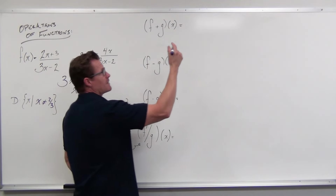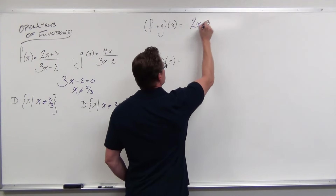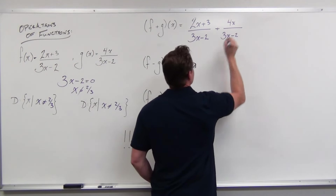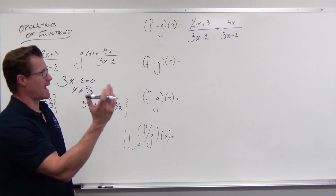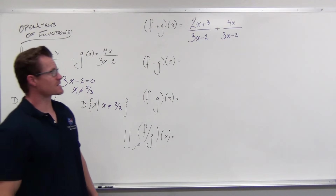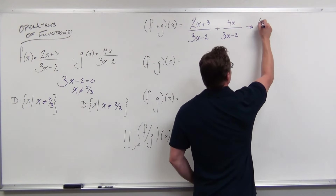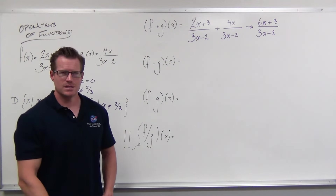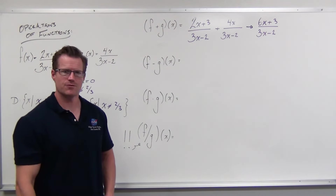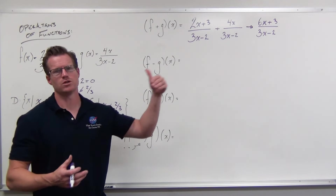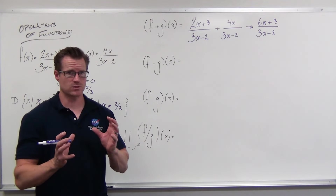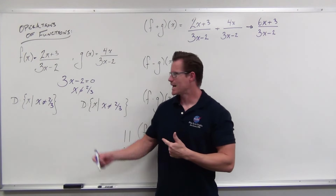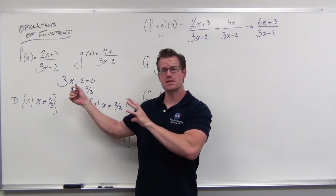So f plus g of x — if we add these functions together, we need a common denominator to add fractions and we already have that, so we're just combining numerators. That gives us 6x plus 3 over 3x minus 2. You can factor the numerator, but it's not going to help you simplify, so I would leave it just like that. And notice your resultant function has the same exact denominator as what we started with, so the domain is going to be the same.